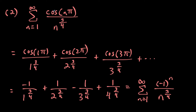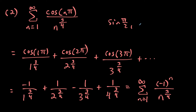Anytime you get cosine n pi, or something like sine of two n plus one times pi over two giving values like sine pi over two, sine three pi over two, and so on, the best thing to do is write it in terms of negative one, one, negative one, one and rewrite it as a simpler series.